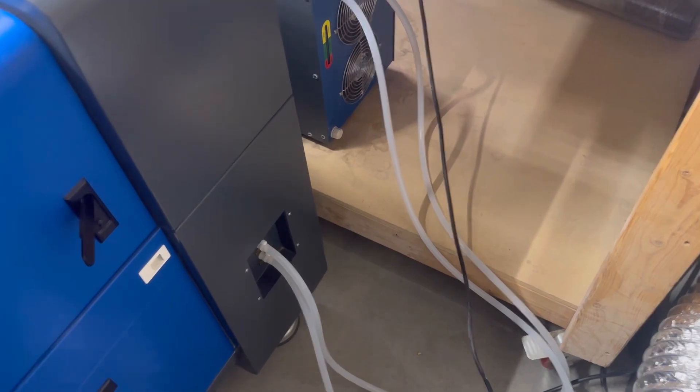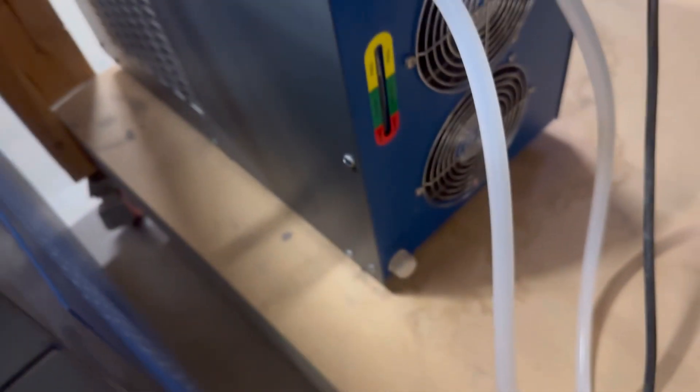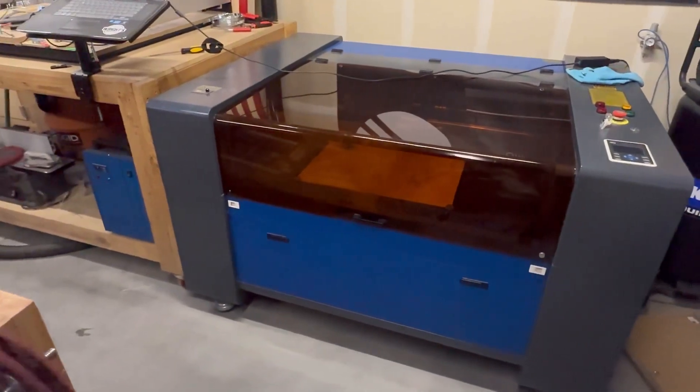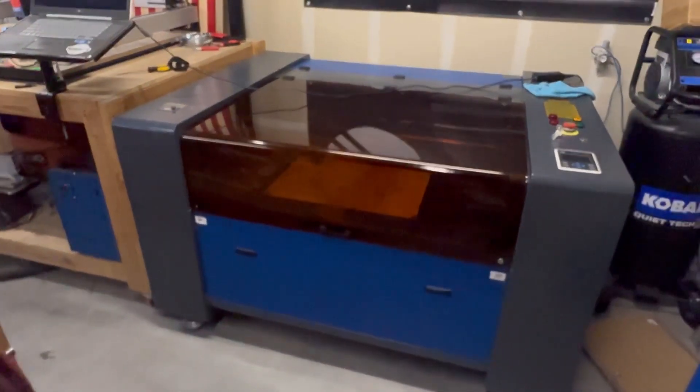We're back behind the laser again. Last thing you want to check is you just want to run your fingers around, make sure you have no leaks, any visible leaks. Nothing on the chiller, can't feel any water, no leaks on the table there. We got the laser pushed back in place, got the chiller running, no leaks. We're good to go.